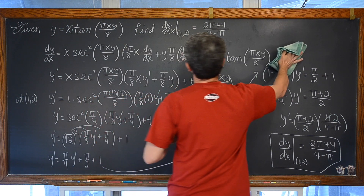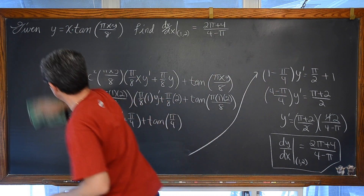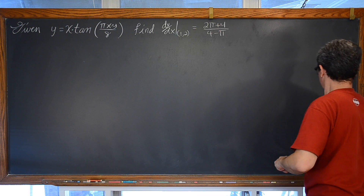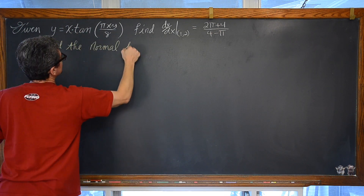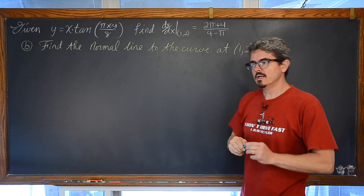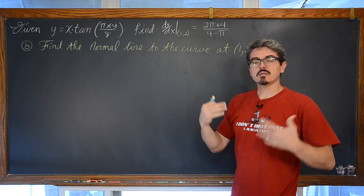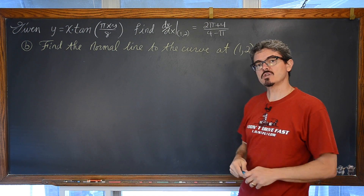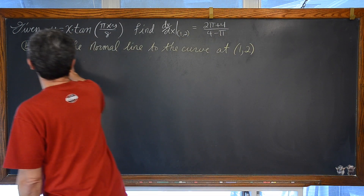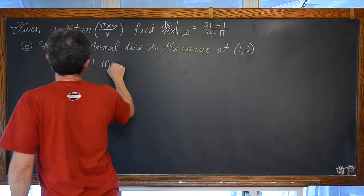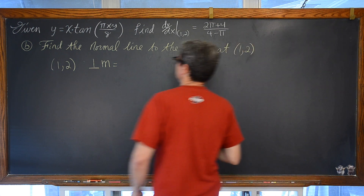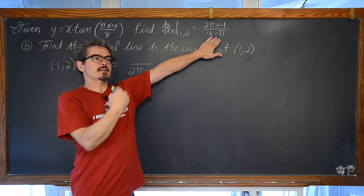Now we are going to find the equation of the line normal to this curve at the point (1, 2). Not the equation of the tangent line but the equation of the normal line. Hopefully you remember that your tangent line is basically parallel to a curve at that point, giving you the instantaneous rate of change, and a normal line is perpendicular. So we just need to write the equation of a line just like in Algebra 1 — we have a point and a perpendicular slope. Perpendicular slopes are opposite reciprocals, so we are going to flip this equation and introduce that opposite idea, pulling out a factor of negative one.